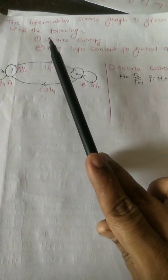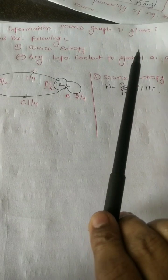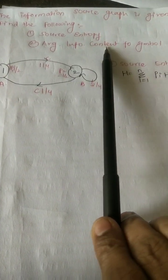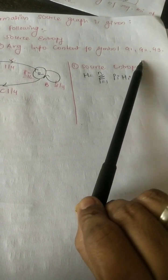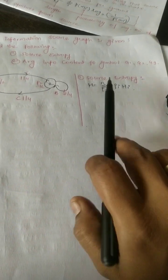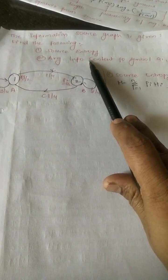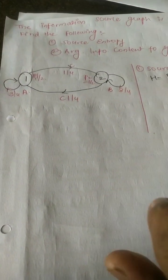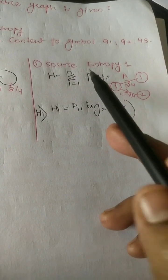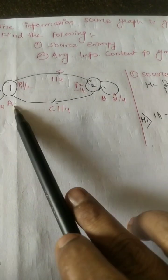We will directly start with the example. The information source graph is given; find the source entropy and average information content of symbol G1, G2, and G3 respectively. First, we will work with the source entropy. According to the graph, we will calculate the source entropy using the formula H equals summation i to n of p_i times H_i. We need to calculate entropy for all sources — we have two sources, state one and state two.